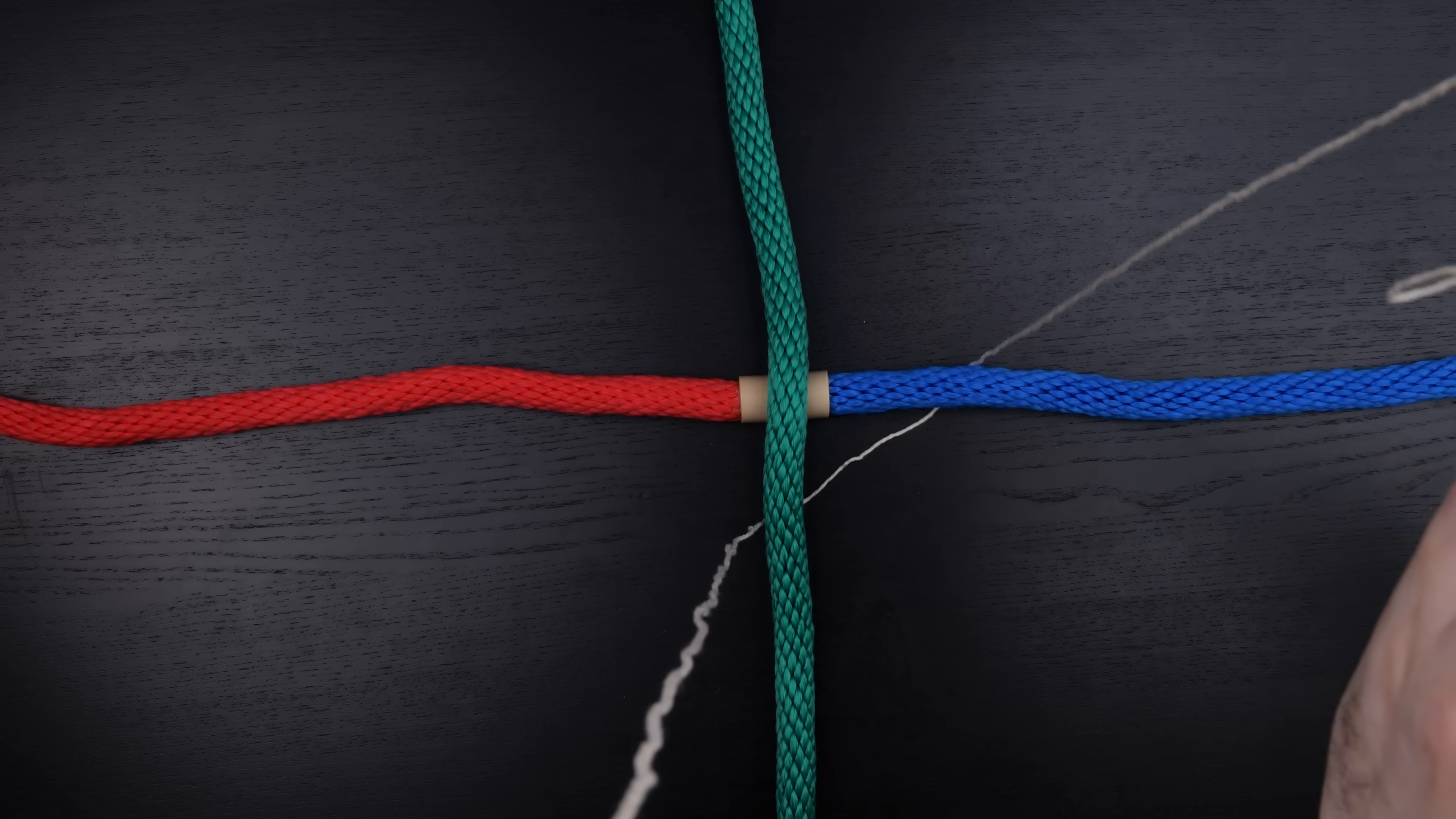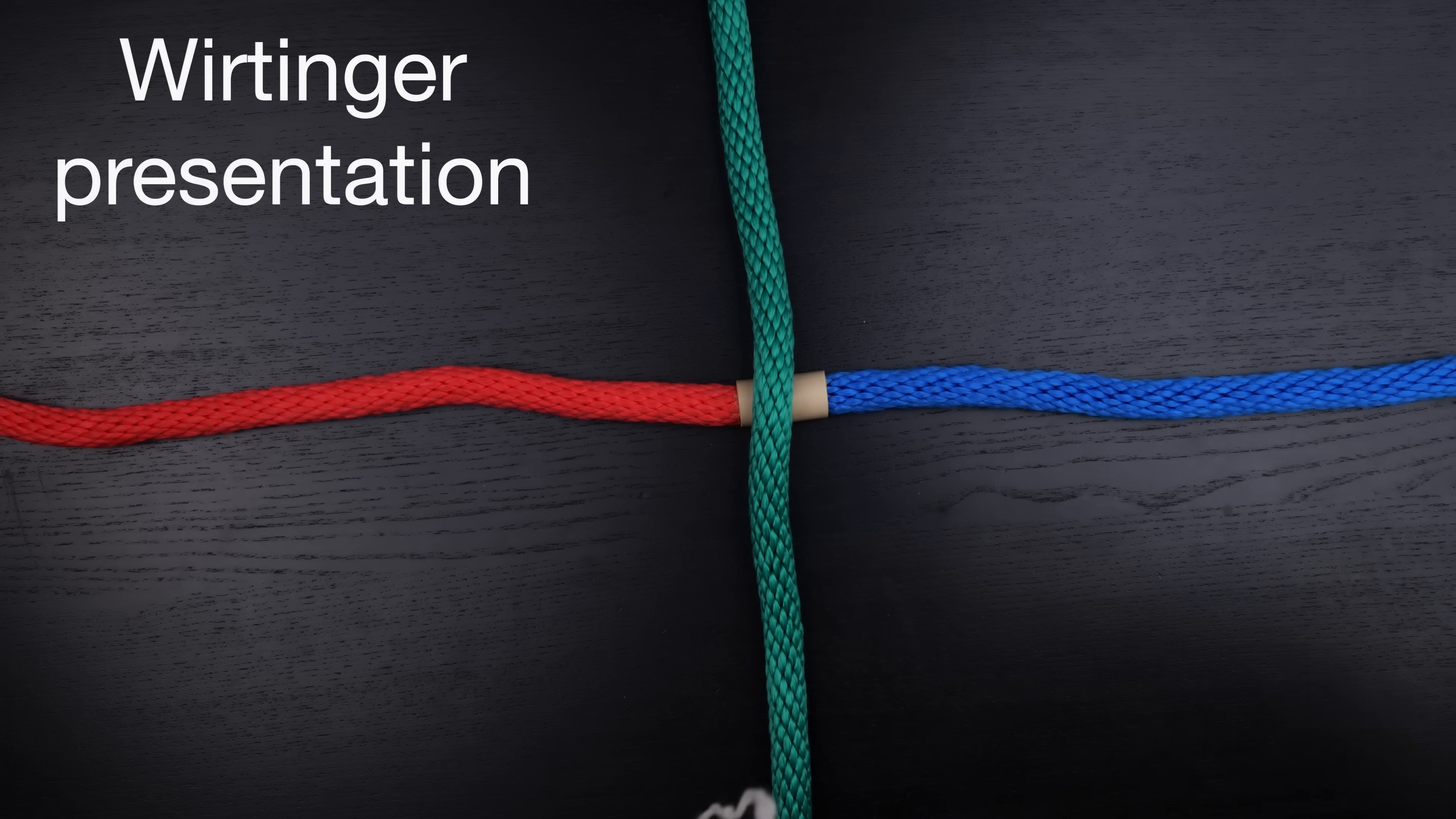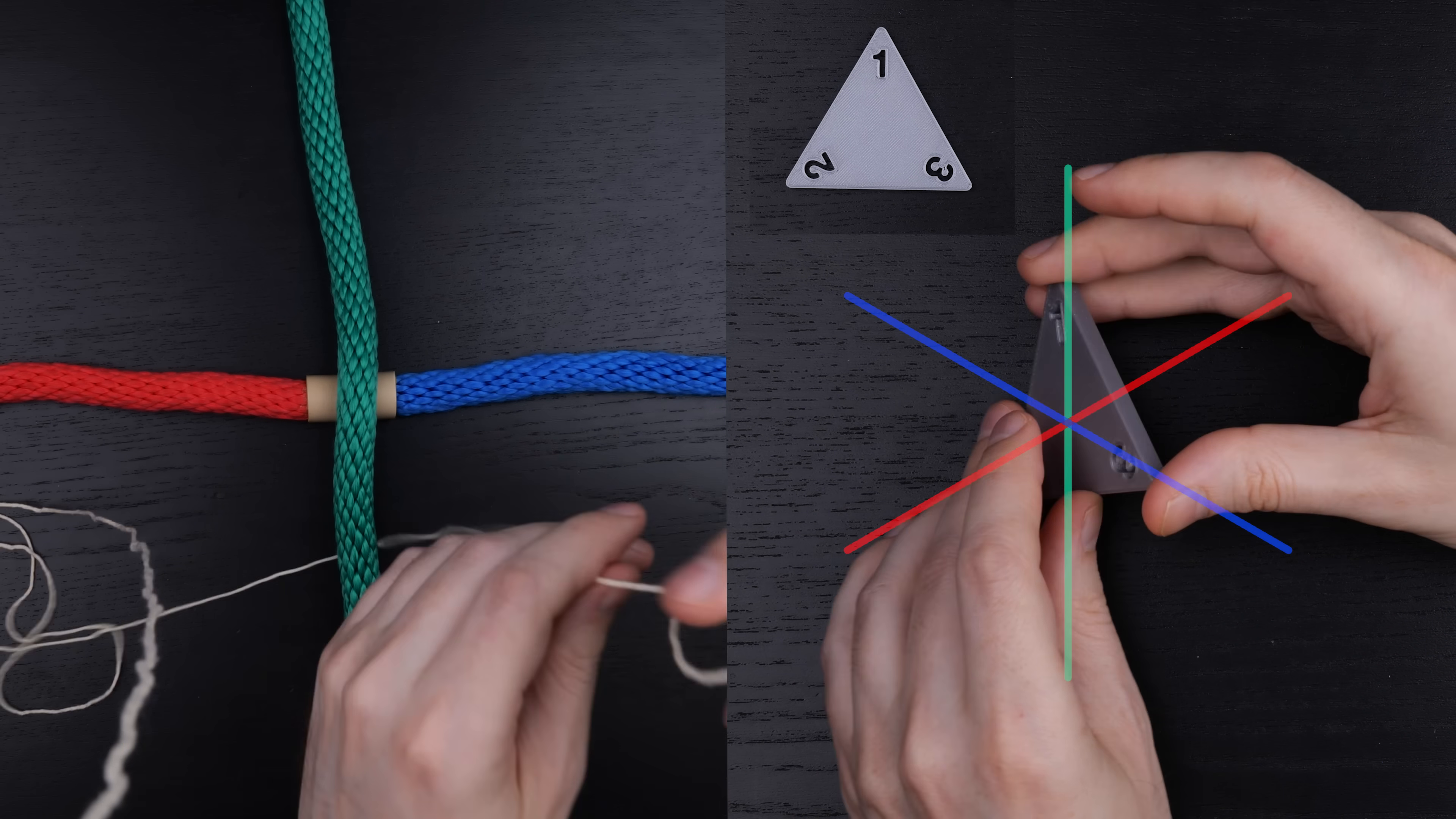If you go around the overstrand, then one of the understrands, then the overstrand in the other direction, and then the other understrand, then you really didn't go around anything. This is one of the relations of the so-called Wirtinger presentation. So let's do that same relation with the symmetries of the triangle. Let's send the three colors of our tricoloring to the three reflection axes like this.